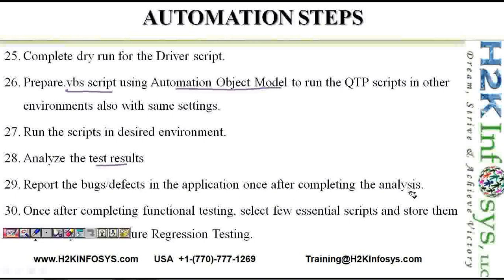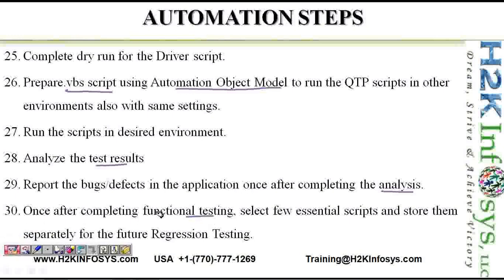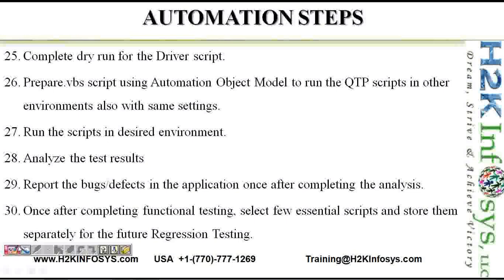We analyze the test results and report bugs or defects in the application once we complete the result analysis. After completing functional testing — QTP being a functional automation testing tool — we select a few essential scripts and store them separately for future regression testing. Regression testing is conducted to make sure that all the defects identified during functional testing are fixed by the developer. These were the different automation steps to follow when using QTP or any other automation testing tool.